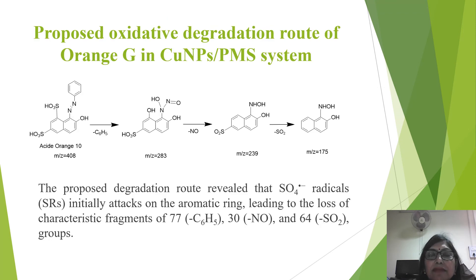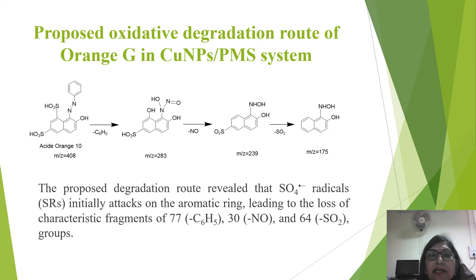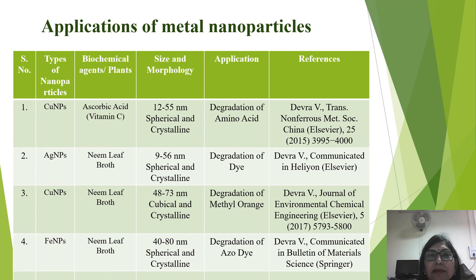This slide shows the proposed oxidative degradation pathway for RhB in the presence of copper nanoparticles. The proposed degradation pathway reveals that sulfate radicals initially attack on the aromatic ring, leading to the loss of characteristic fragments of the benzene, nitrogen oxide, and sulfur dioxide groups, and finally converted to less harmful products.